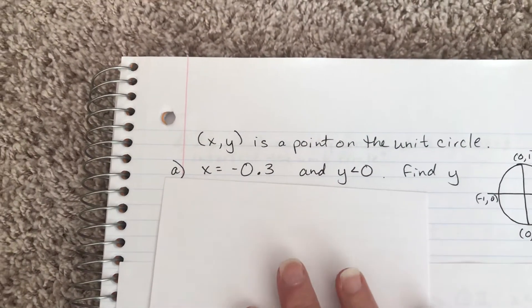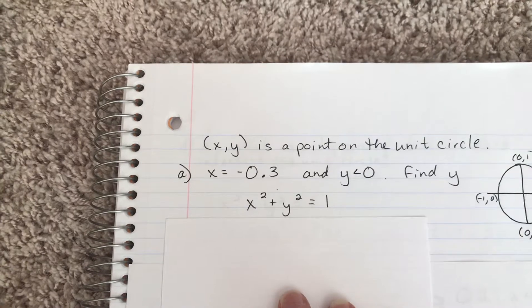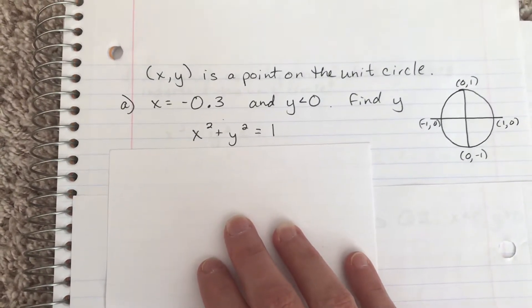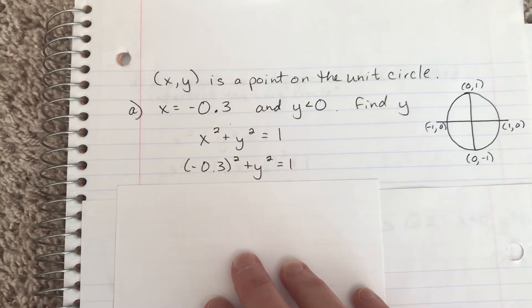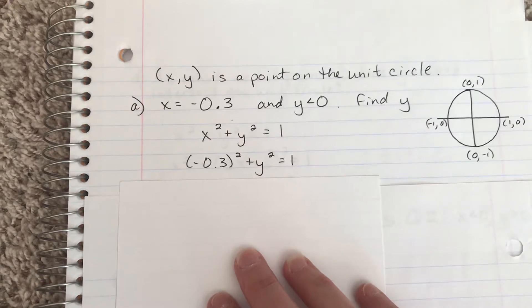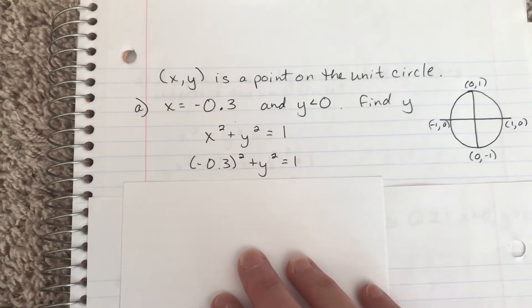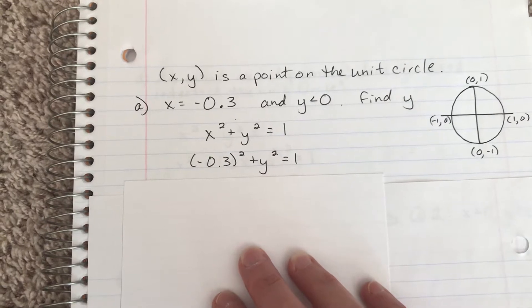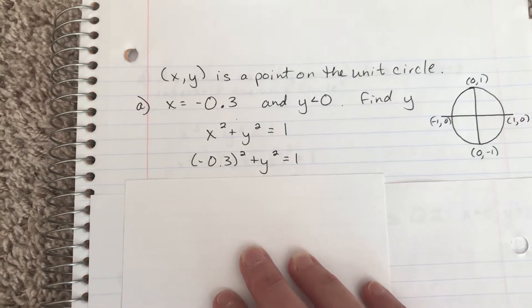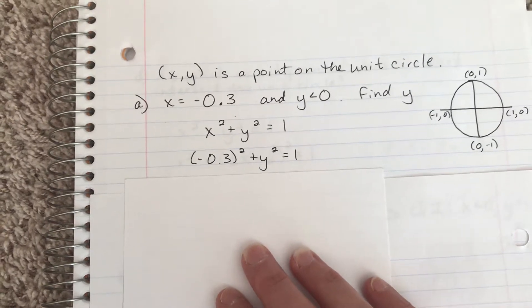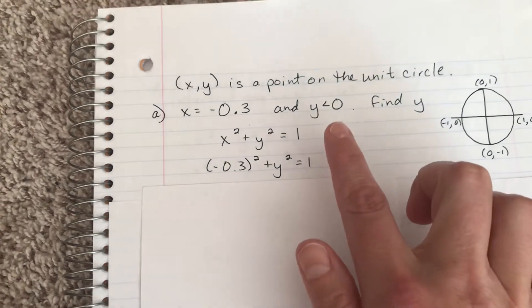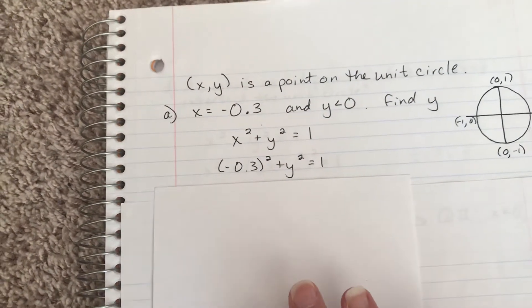All we really need then is to remember the equation of the unit circle, and since x equals negative 0.3, we're just going to plug that in for x. We square negative 0.3, solve for y. At some point we're going to get y squared equals a number. We take the square root of both sides, and whenever you square root both sides, you need to remember this positive or negative square root. We need the negative square root because of the initial condition given to us.